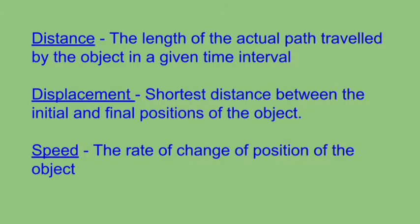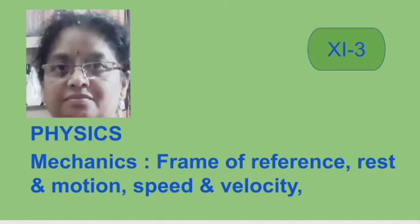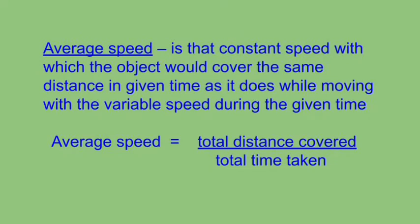We are very familiar with the term speed. The speed of an object is the rate of change of position of the object. It is the total distance covered divided by the total time taken to cover that distance. When an object covers equal distances in equal intervals of time, the speed is known as uniform speed. The speed of an object is variable if it covers unequal distances in equal intervals of time, or equal distances in unequal intervals of time. When an object moves with variable speed, like the motion of any vehicle on the road, the average speed is that constant speed with which the object would cover the same distance in a given time as it does while moving with variable speed during the given time.